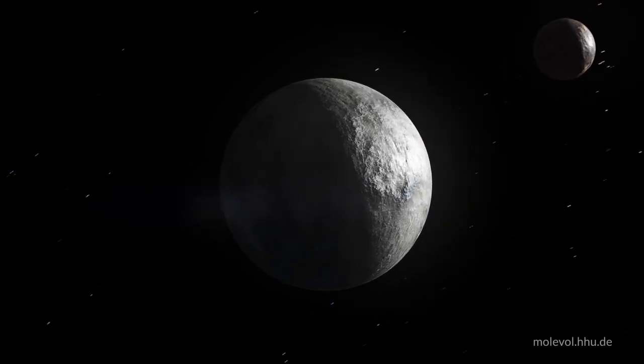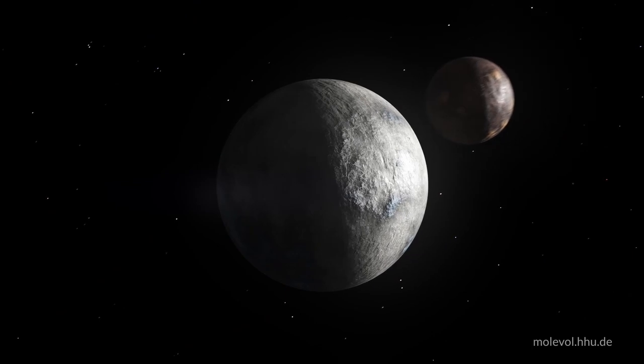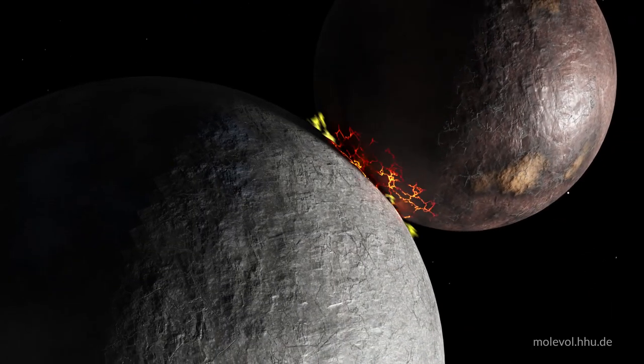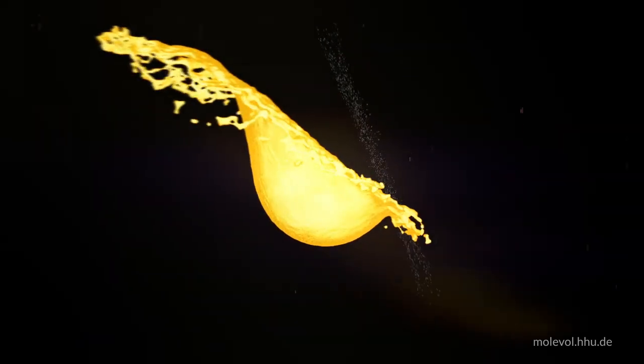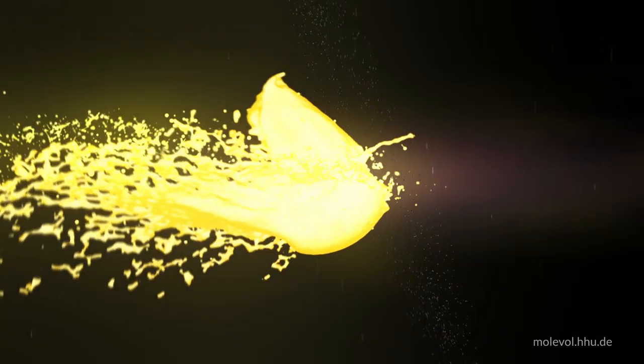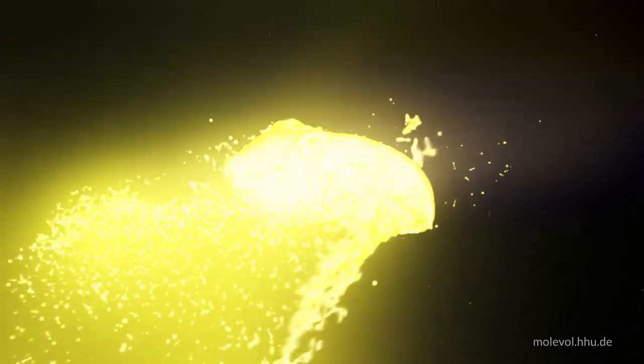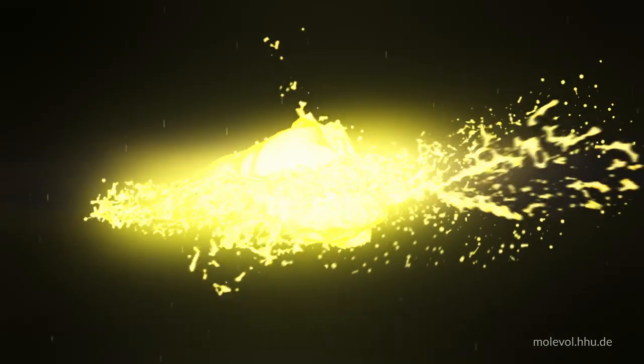4.5 billion years ago, just after the Earth had formed, a Mars-sized planet collided with the Earth in what is called the Moon-forming impact. This melted the entire crust and mantle. Massive amounts of magma were cast out into space, and from that material, the Moon was formed.